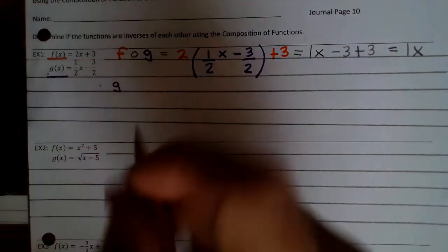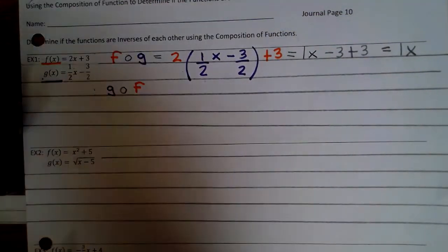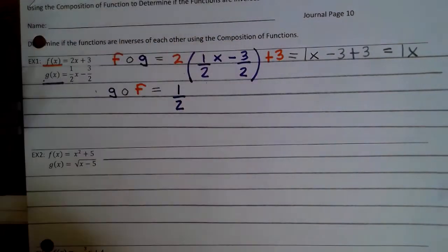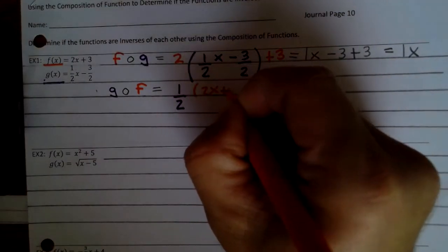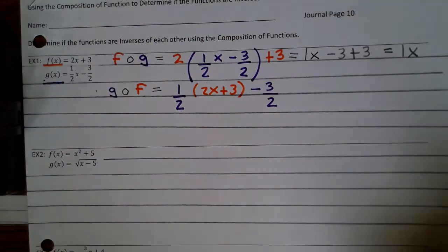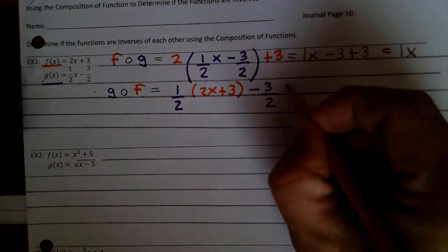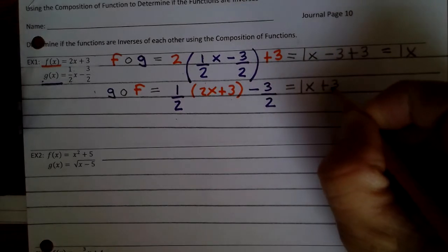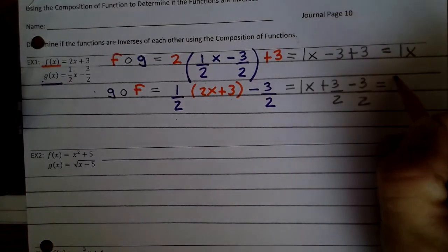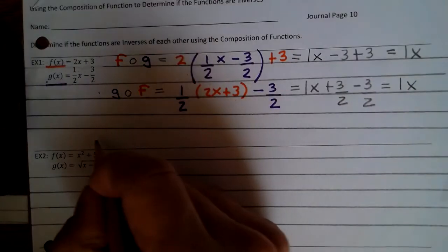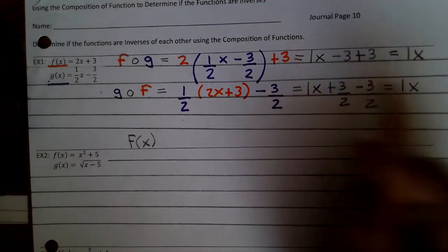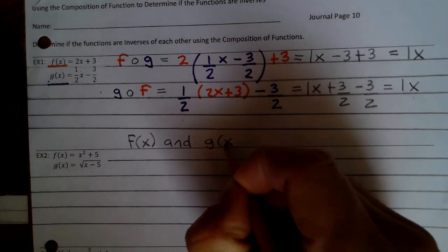So g of f — we're going to put the function f into g. So that's one-half times (2x plus 3) minus 3, divided by 2. One-half times 2x is 1x. One-half times 3 is 3/2, minus 3/2. The 3 halves minus 3 halves is 0, so we're left with 1x. Since f of g is equal to x and g of f is equal to x, we can say that f of x and g of x are inverses.